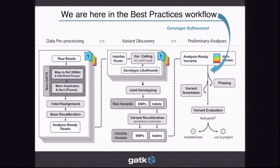This is going to be another preliminary analysis that comes after you do your full best practices workflow. It works on your recalibrated variants. Unfortunately, right now it's not in the production pipeline, but we hope it will be soon, and we highly recommend that you run it yourself if you're interested in getting better genotype calls.